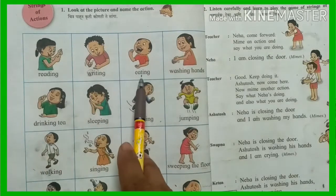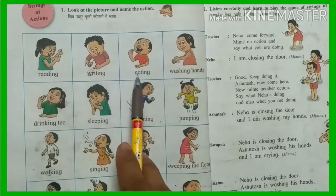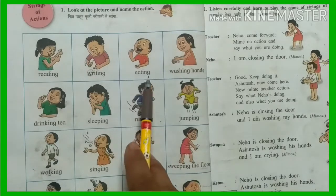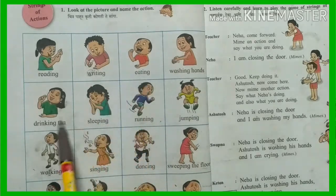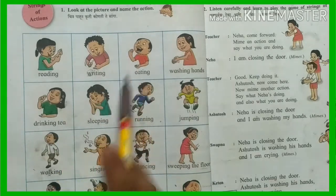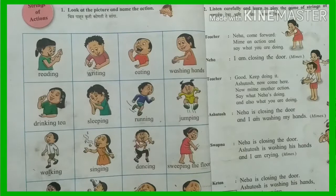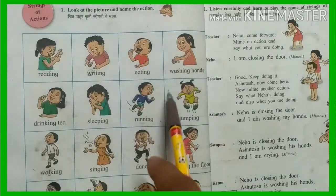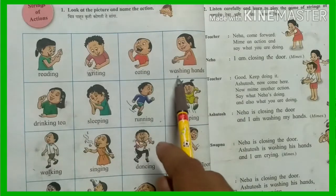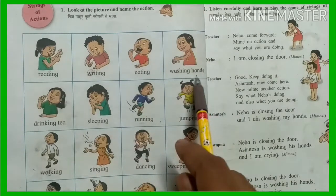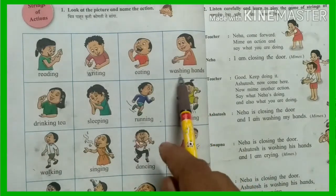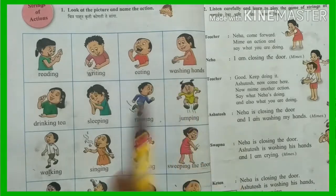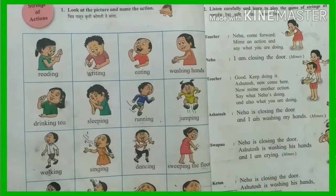Next picture: Eating. E-A-T-I-N-G. Eating means Khane. Next action: Washing Hands. Haat Dhune — washing hands is an action.